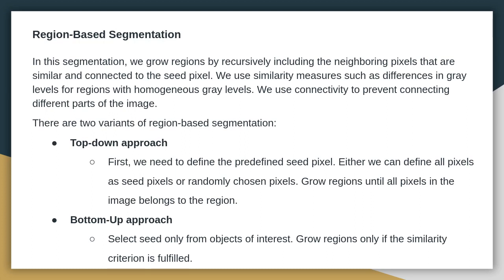Similarity measures such as differences in gray levels or regions with homogeneous gray levels are used. We use connectivity to prevent connecting different parts of the image.